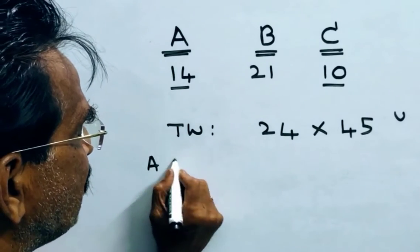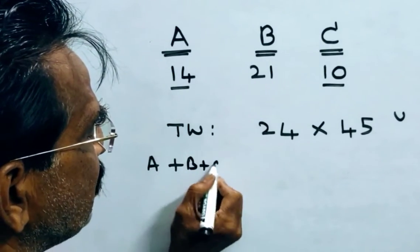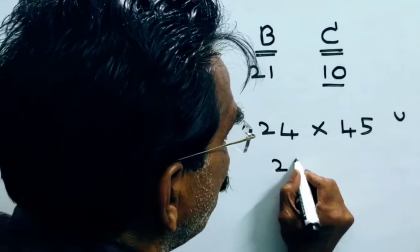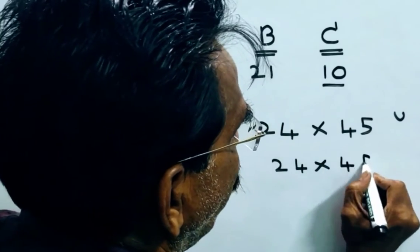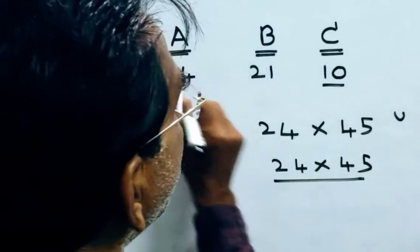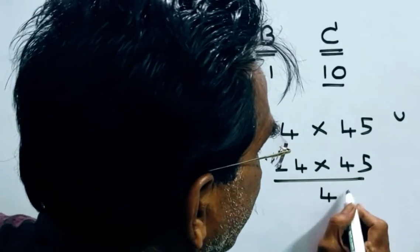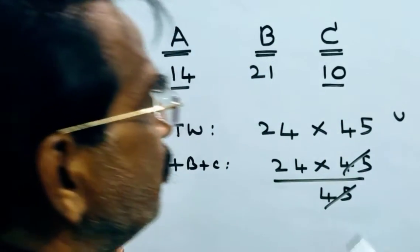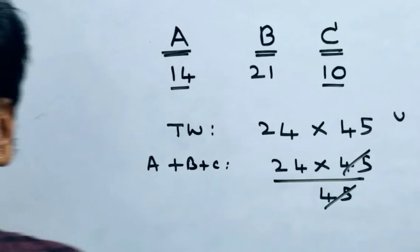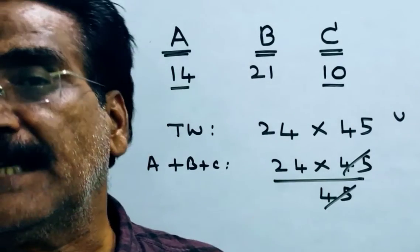So, A plus B plus C can do a full work in 24 into 45 by 45 units per day they do. So, A plus B plus C can complete the work in 24 days.